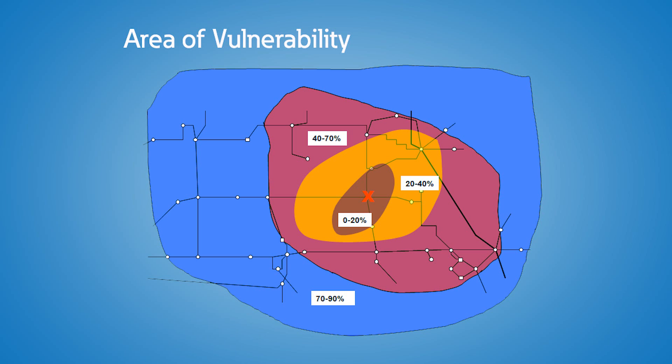Typically, when the utility distribution has a fault, the voltage at the location of the fault is zero. But because the electrical power grid is interconnected with many generation sources, the voltage at a location remote to the fault is greater than zero. Generally speaking, the farther away you are from the fault, the higher your retained voltage will be.